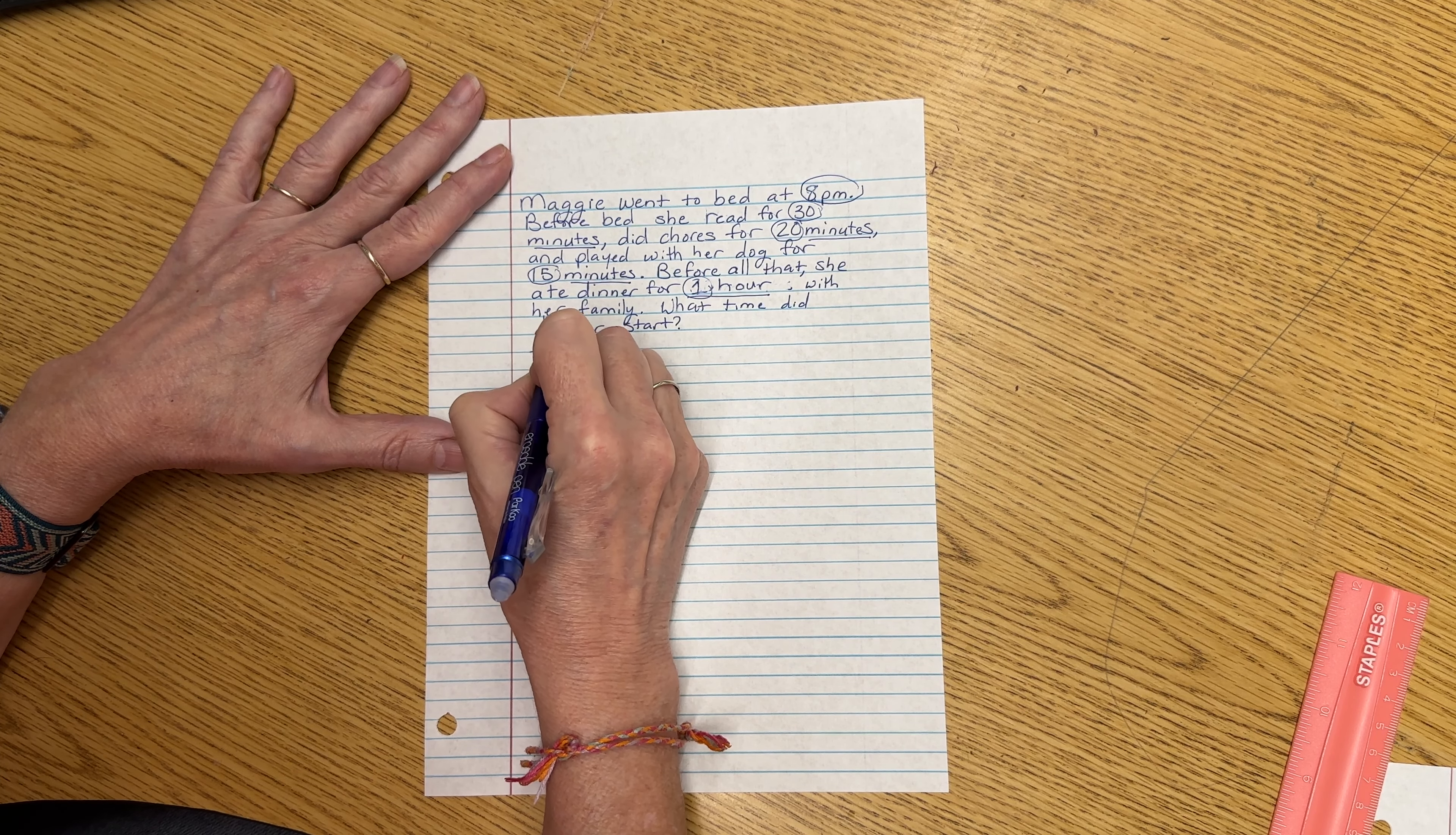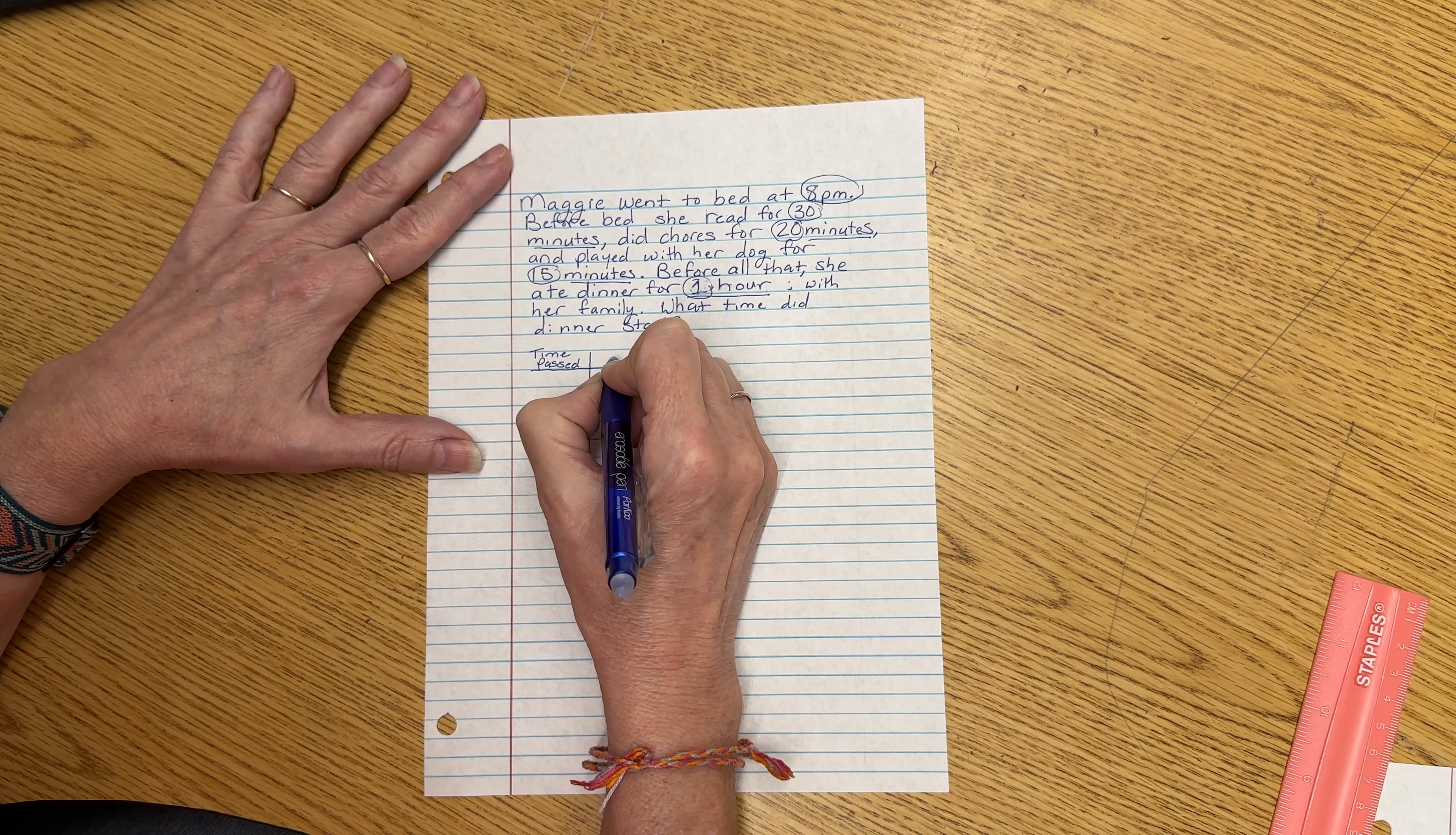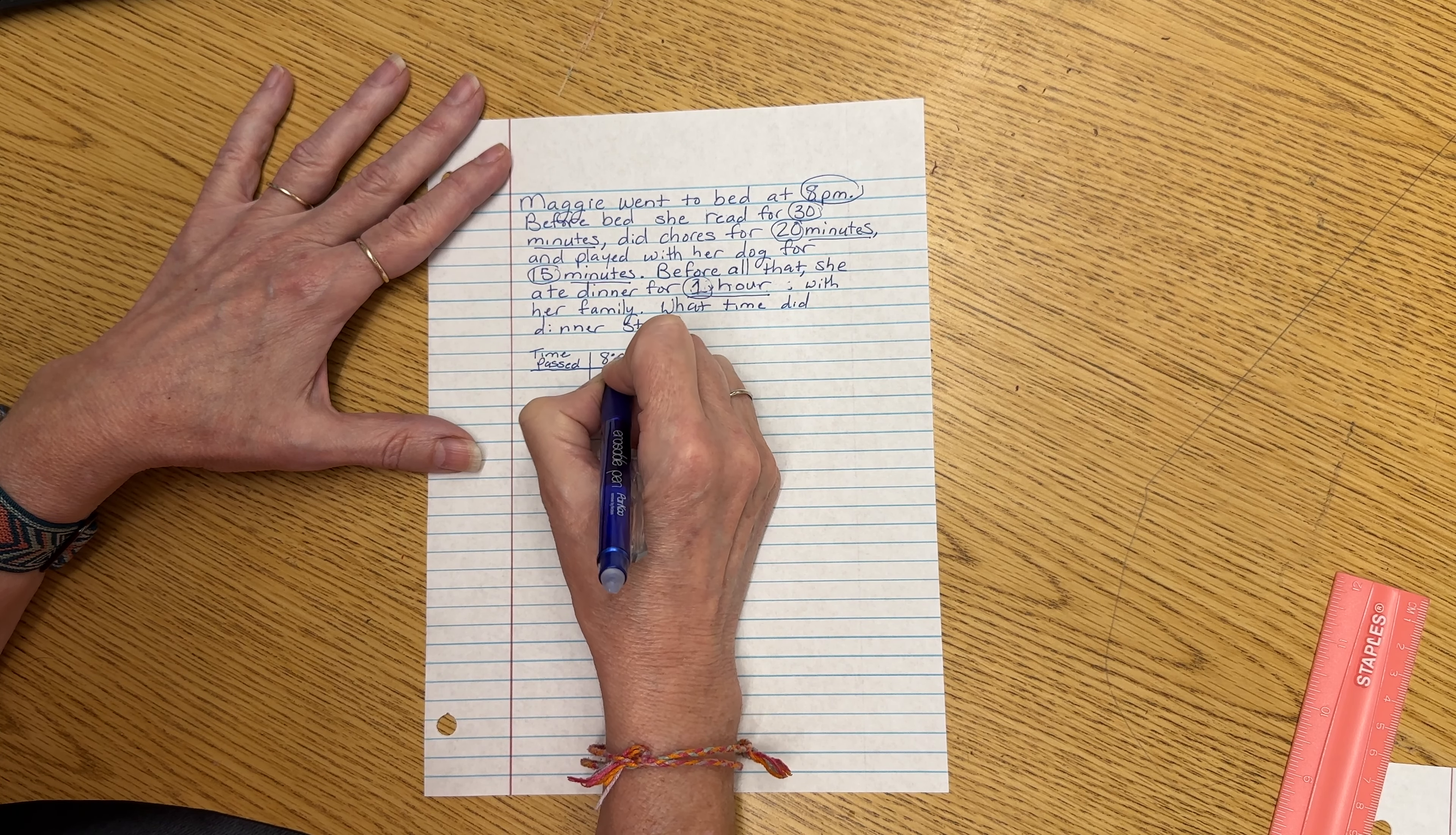So in my T-chart, I'm going to write time passed over here. And I can't write my start time. I'm going to write my end time. She went to bed at 8 p.m.